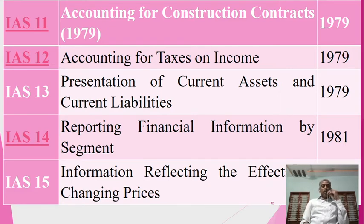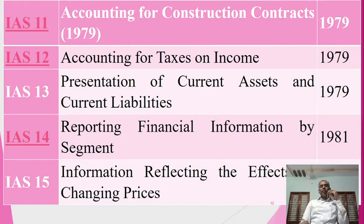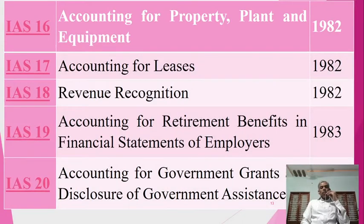IAS 14 is on reporting financial information by segment, established in 1981. IAS 15 covers information reflecting the effects of changing prices, with policies and standards framed and established in 1981. IAS 16 is on accounting for property, plant and equipment, with standards and policies established in 1982.